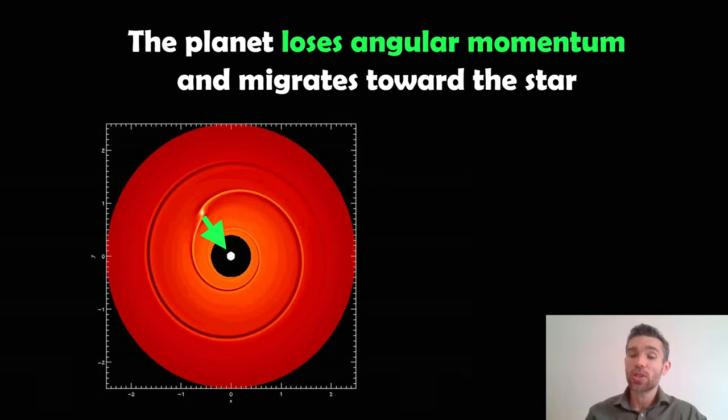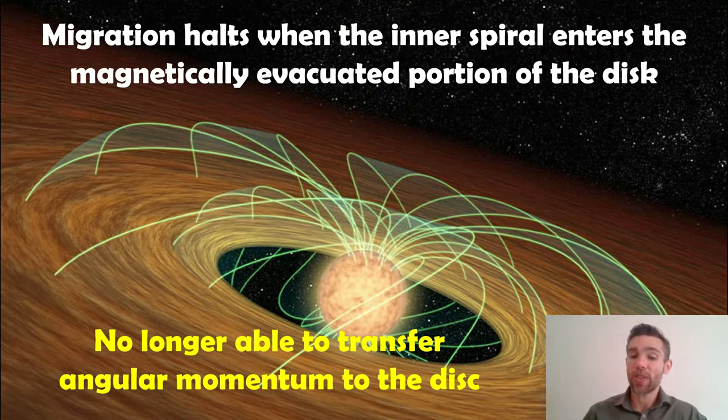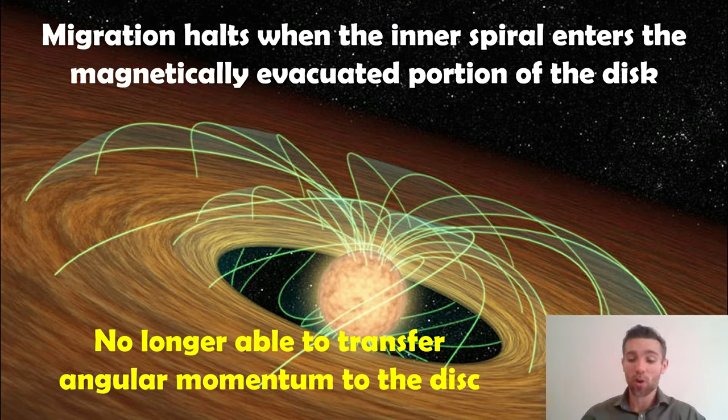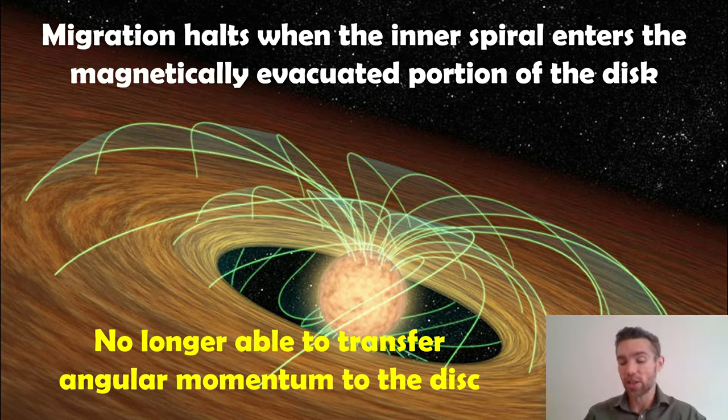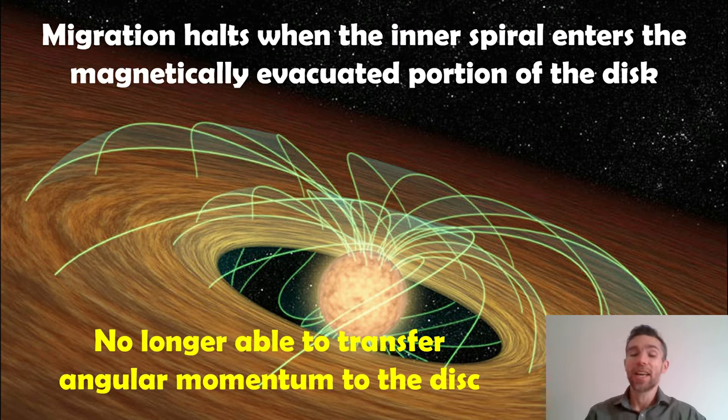Most often than not it's actually pushed inwards because of the imbalance between these two spiral waves. In this scenario, because of the imbalance, the planet will lose angular momentum and then it migrates inwards towards its star. We start to get like a hot Jupiter, because you have to bear in mind while it's migrating it's still actually growing off the disk, so it will increase in size as it gets closer as well. This migration is going to halt when that inner spiral enters the magnetically evacuated portion of the disk. When that spiral wave reaches there it's no longer going to transfer any angular momentum to the disk, so it gets halted at that point.